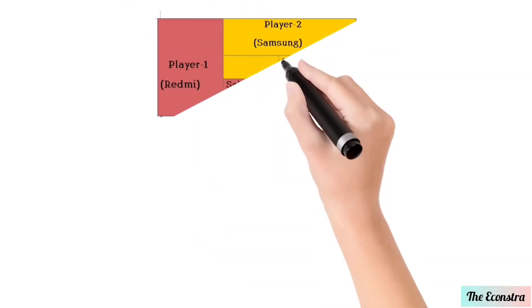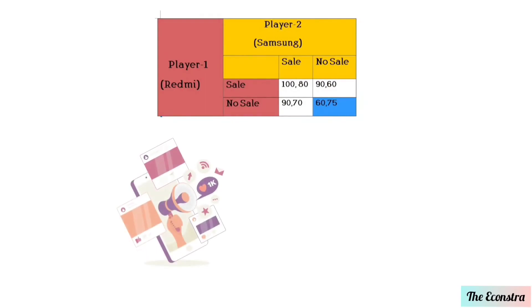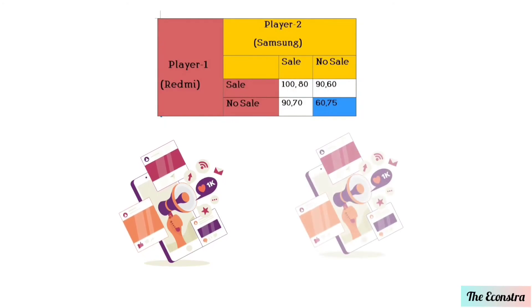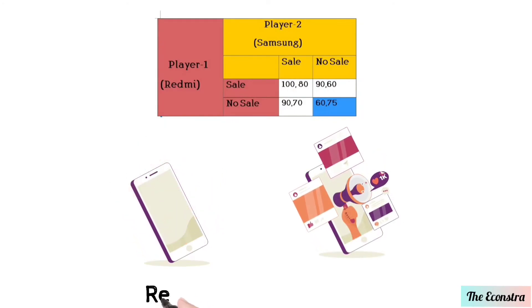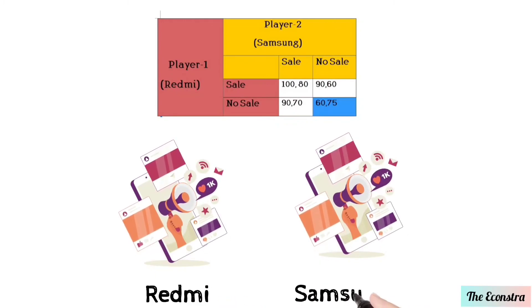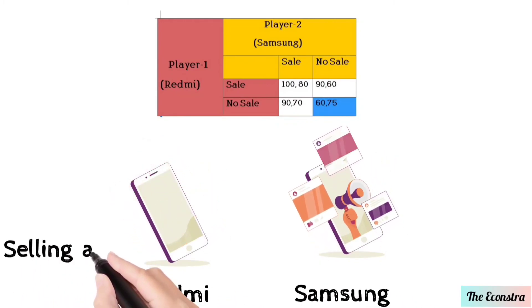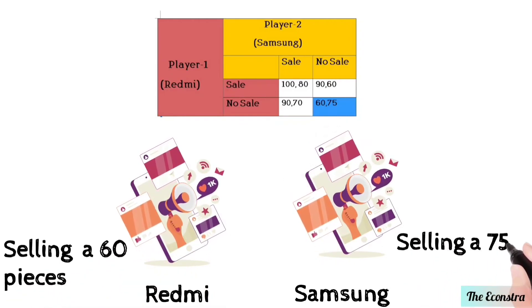In the fourth condition, both Player One and Player Two have no sale. Player One sells 60 goods and Player Two sells 75 goods.